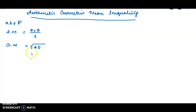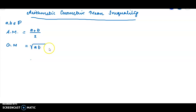If there are n numbers, the geometric mean is the nth root of the product. For example, the geometric mean of three numbers A, B, C is the cube root of A times B times C. In general, the geometric mean of n real numbers is the nth root of the product of those n numbers.